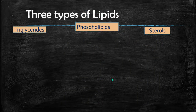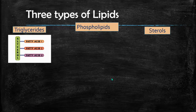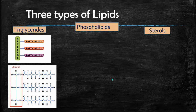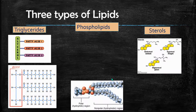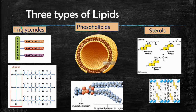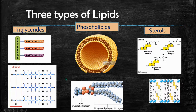Another type of macromolecule is lipids. We have our fat energy storage molecule called a triglyceride, which is a lipid. Cell membranes are made out of phospholipids. And then we have our hormones, which are sterols. We're really going to focus on triglycerides in this unit, and in our next unit we'll talk more about cell membranes and hormones.